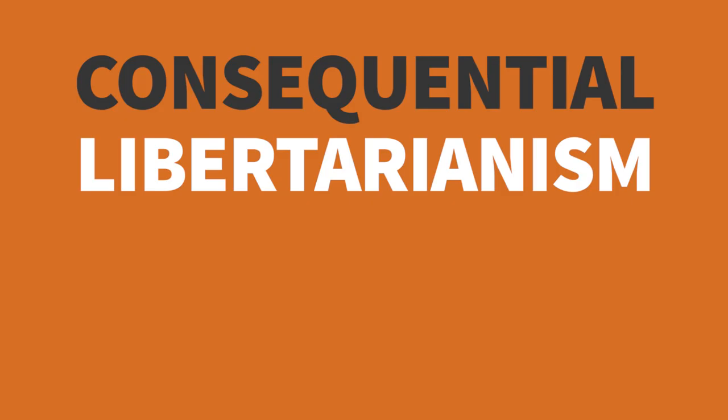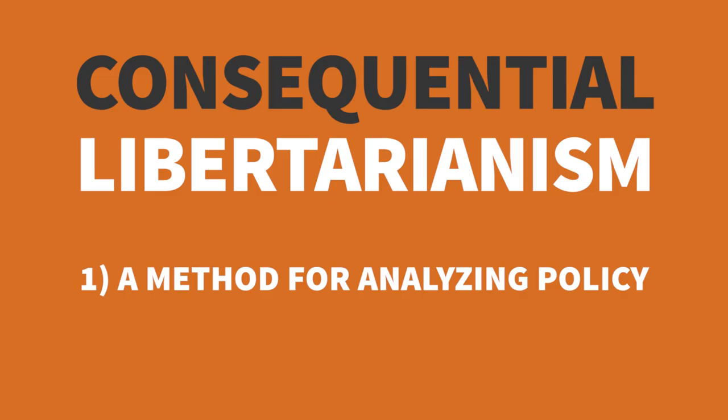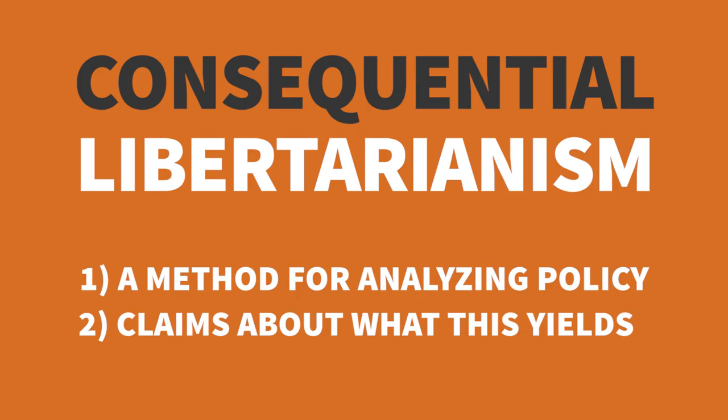To give you an outline of what we're going to cover today: I'll first try to explain consequential libertarianism. It consists of two main pieces — one piece is a method, an approach for thinking about different government policies and which ones are useful; the second piece is a set of claims about what that methodology yields in terms of which government policies are actually desirable. I'll then give examples of policies that consequential libertarianism opposes, compare it with other isms, discuss the libertarian perspective's consistency across a broad range of policies, and do an overview of the lecture topics.